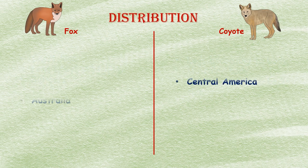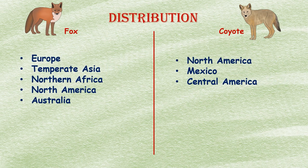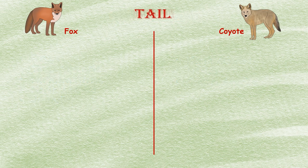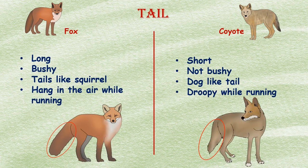In the Old World, the fox ranges over virtually all of Europe, temperate Asia, and northern Africa. In the New World, it inhabits most of North America and has also been introduced to Australia. The coyote has a wide distribution throughout North America, Mexico, and into Central America.